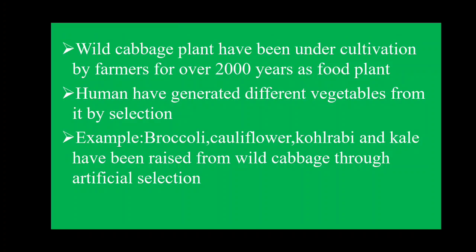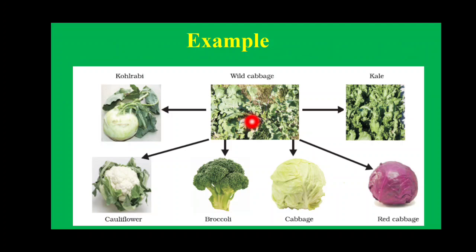The wild cabbage plant has been under cultivation by farmers for 2,000 years as a food plant, and humans have generated different vegetables from it by selection. These examples — kohlrabi, kale, broccoli, and others — are all formed from this one variety, the wild cabbage. Thank you.